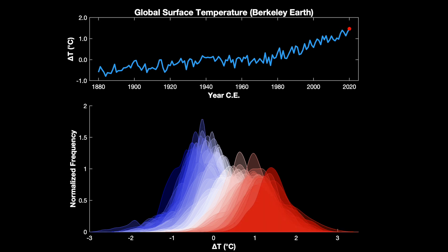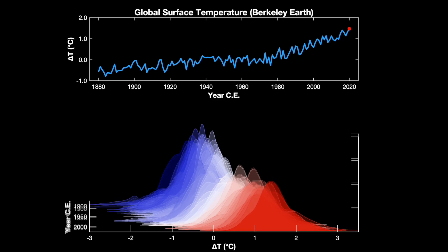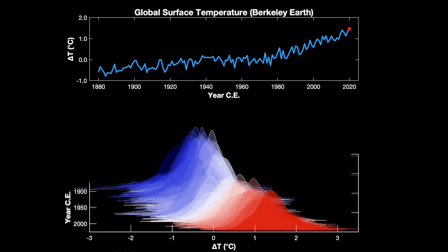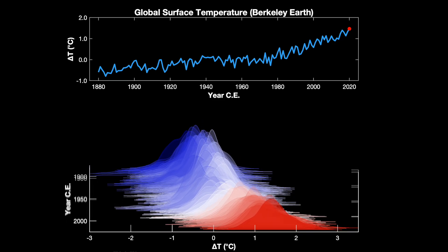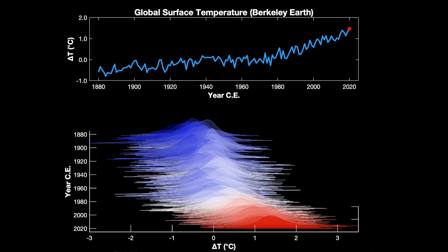The detection of climate change is thus more than a matter of drawing regression lines through a time series. It is a measure of shifts in the probability distribution of a variable, whether temperature, precipitation, humidity, drought, ice extent, or any other metric of the climate system.